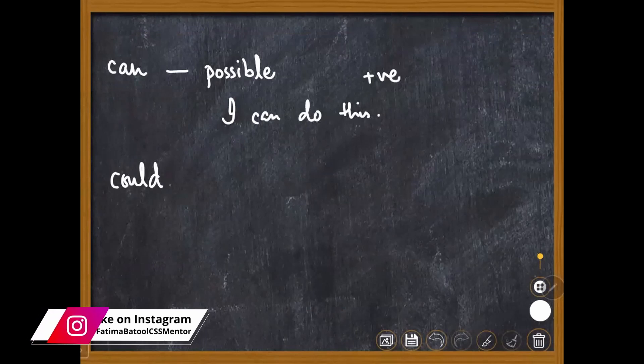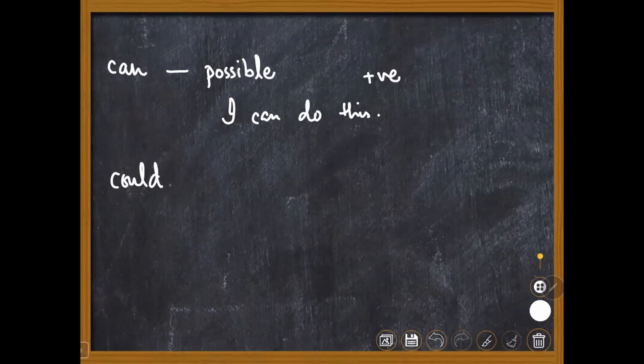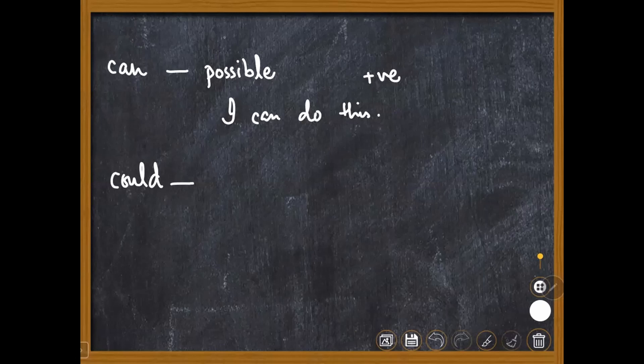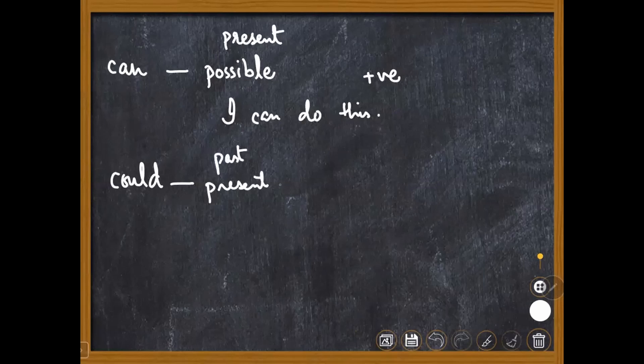One thing is, there's a difference between can and could. Could can be used in past. But when we use could in present, it means that what we're talking about is less possible. If can is 100% possibility, then could's possibility is 60%. It is less possible.